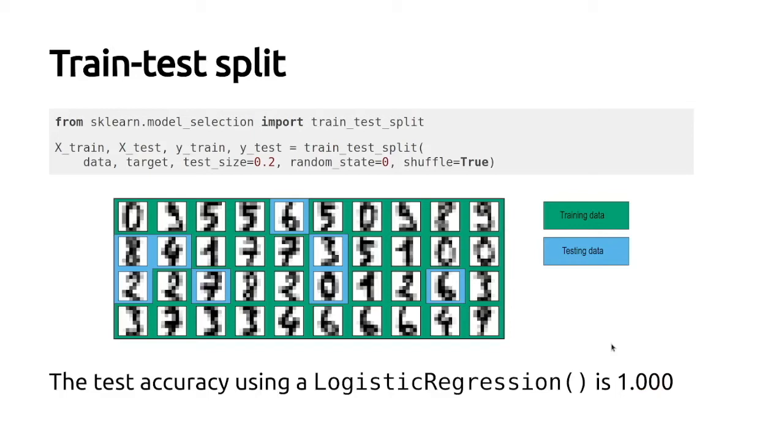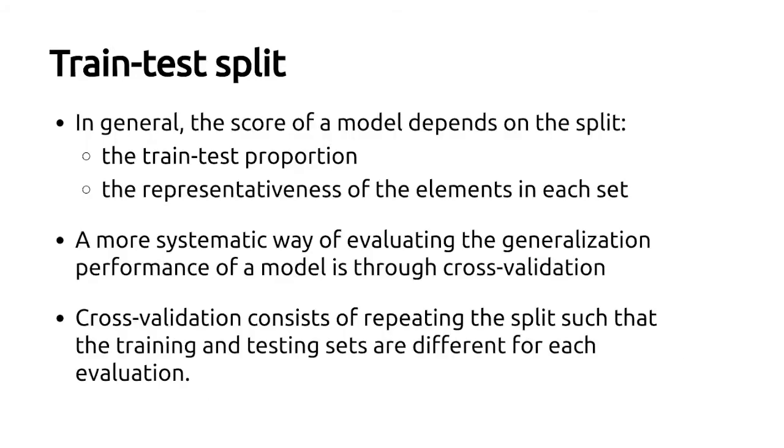But can we really trust this result or can we trust the former? Well, actually in general, the score of a model depends on the split. It's either because of the train test proportion or because of the representativeness of the elements in each set.